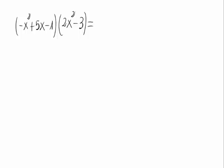That is, multiplicating this first monomial times the second polynomial, the second monomial times the second polynomial, and the third monomial times the second polynomial.